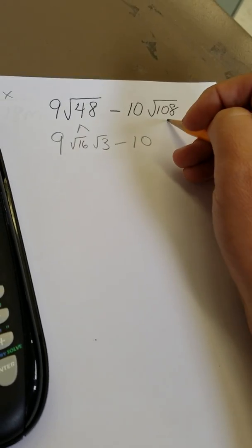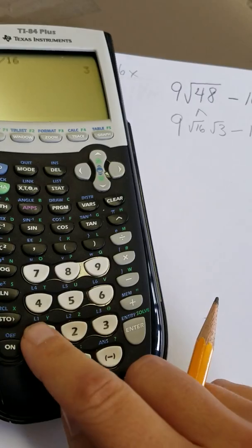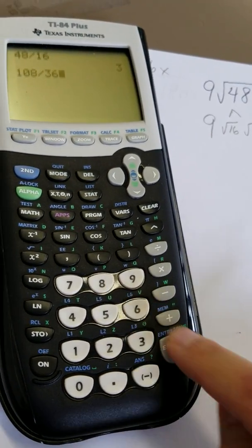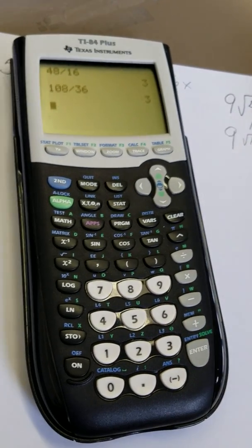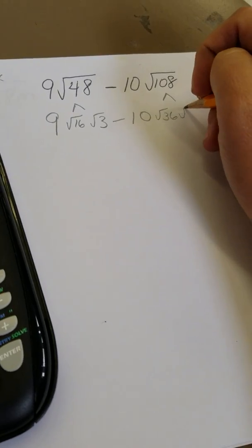Minus 10, 108. Let's try 108 divided by 36. Oh, and again, it does. 36 times 3.